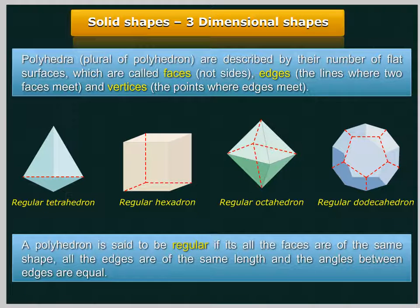A polyhedron is said to be regular if all the faces are of the same shape, all the edges are of the same length, and the angles between edges are equal.